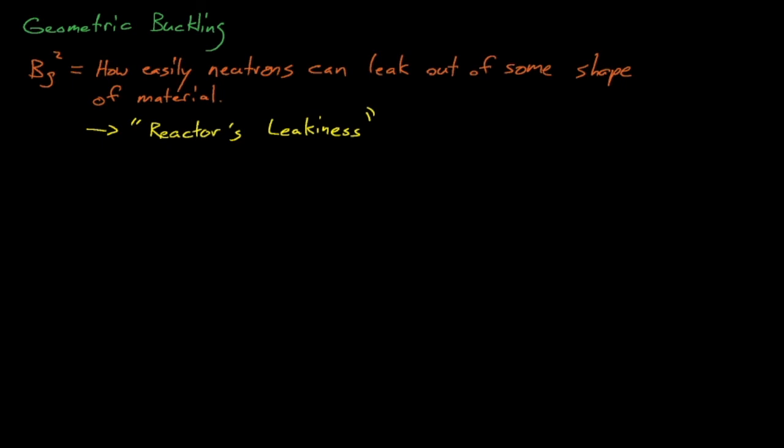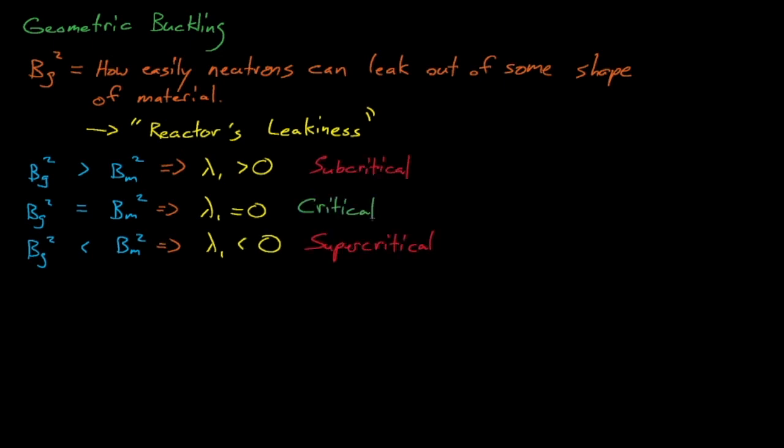On the other hand, shapes like a big flat pancake have higher geometric bucklings since they are so spread out. Neutrons in these shapes are more likely to exit them than they are to head towards other fuel regions. If a shape's geometric buckling is greater than the shape's material buckling, then it means that the system is more leaky than it is able to sustain a chain reaction, which means that it will be subcritical. Similarly, a system whose geometric buckling is less than this material's buckling will be supercritical, and a system whose geometric buckling exactly equals its material buckling will be exactly critical.